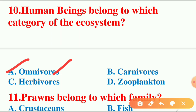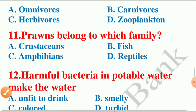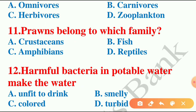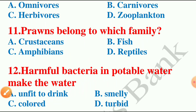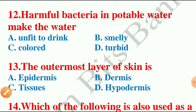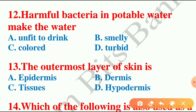Moving on to the next question: prawns belong to which family? The options are crustaceans, fish, amphibians, or reptiles. The answer is option A — crustaceans. Next question: harmful bacteria in potable water make the water — unfit to drink, smelly, colored, or turbid? The answer is unfit to drink. Harmful bacteria in potable water makes the water unfit to drink and may also cause cholera or typhoid fever.